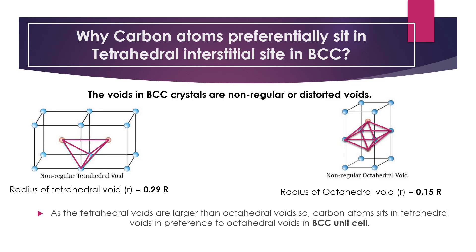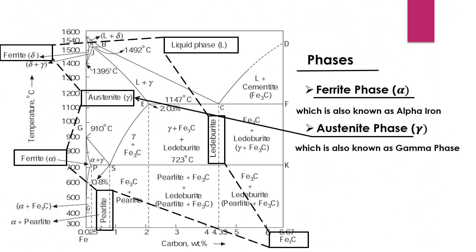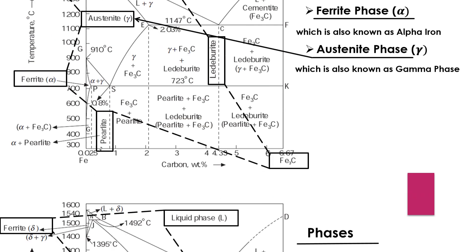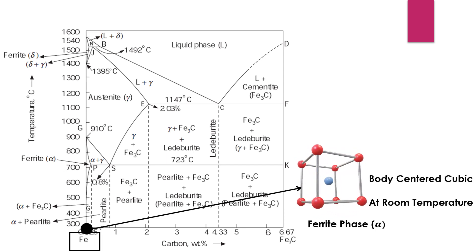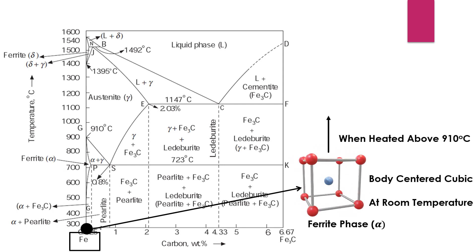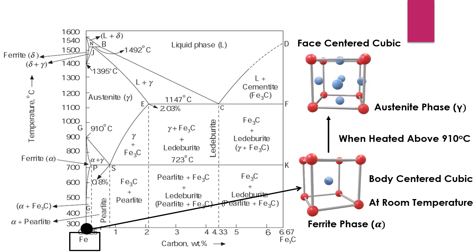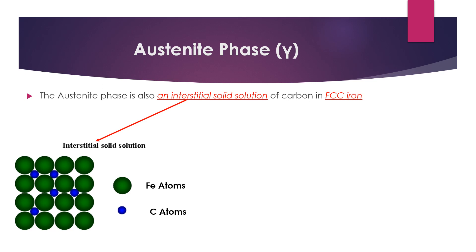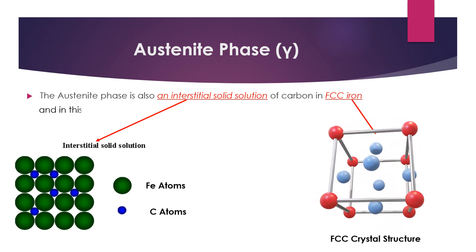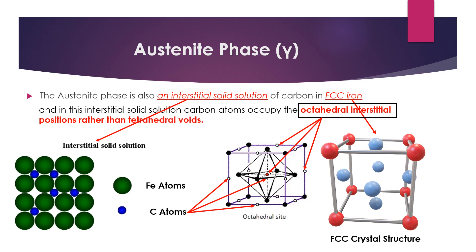The second most important phase is the austenite phase, also known as the gamma phase. The crystal structure of pure iron is body-centered cubic at room temperature, known as the ferrite phase. When heated above 910 degrees centigrade, it undergoes a phase transformation in which atoms rearrange to form a face-centered cubic crystal structure, known as the austenite phase. This austenite phase is also an interstitial solid solution of carbon in FCC iron, where carbon atoms occupy the octahedral interstitial positions rather than the tetrahedral voids.